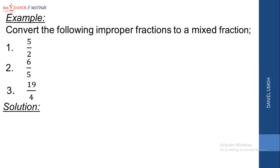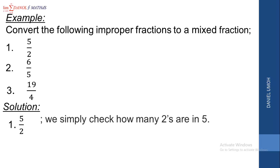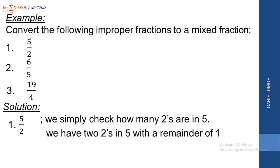Let's look at the solution. Let's convert 5 over 2. You can see that is an improper fraction because the denominator of 2 is small. To do this, we are going to check how many 2s are in 5. There are two 2s in 5 — because 2 times 2 is 4. So 5 divided by 2 gives us 2 remainder 1. We can see that we have two 2s in 5 with a remainder of 1. So 5 over 2 equals 2 whole number, remainder 1, all over the original denominator.